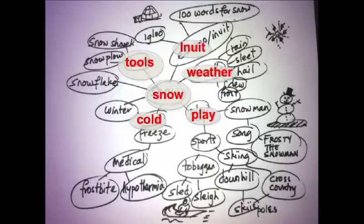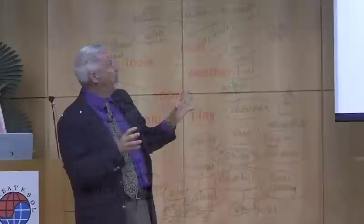I had five general categories: tools, the Inuit — people who live in the north of Canada — weather, plague, and cold. Cold was a bit of a mistake; it should have gone under weather, but that's part of what we do in our schema — we're always adjusting things.